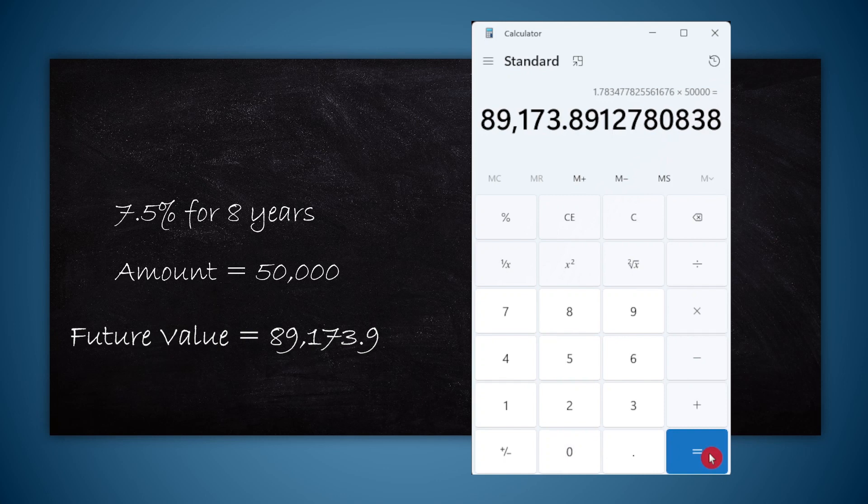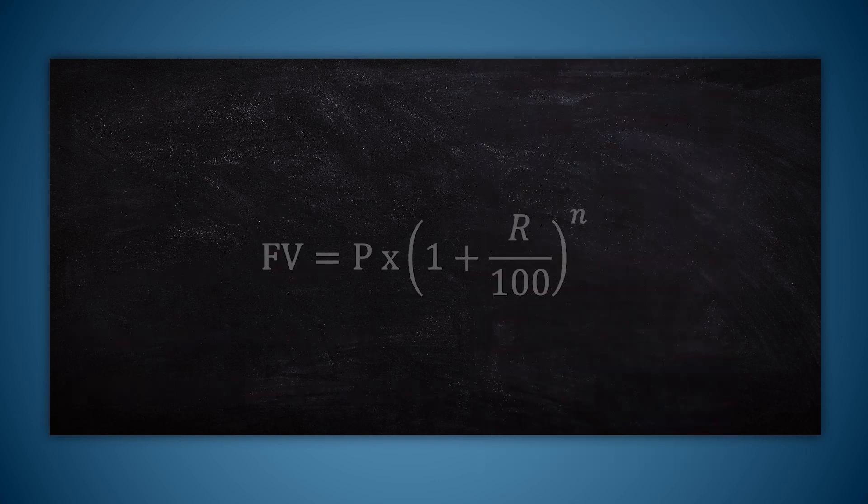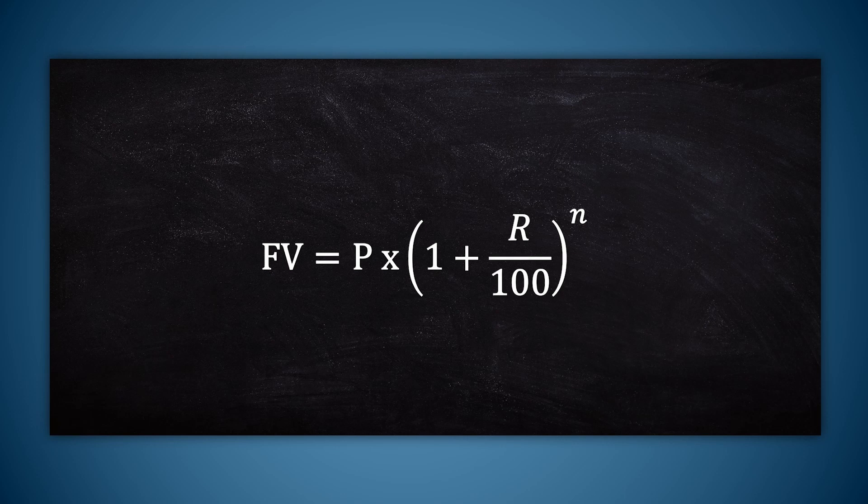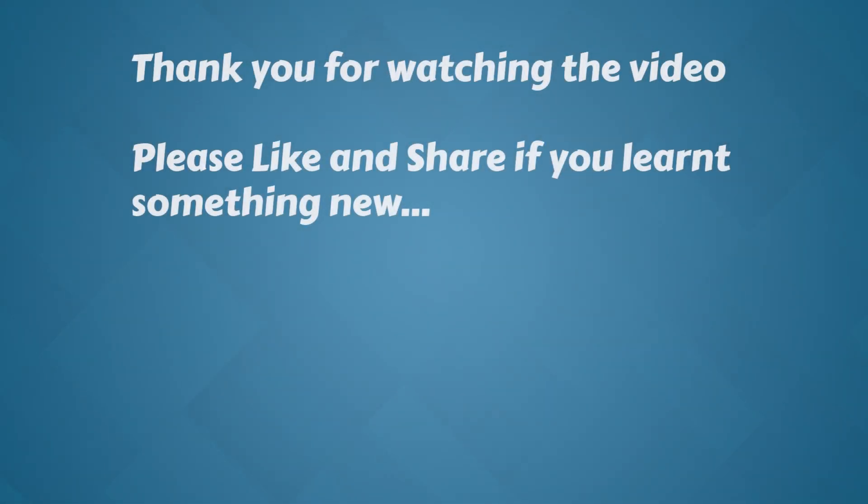If you want to know how much is the interest that you earned alone, you can subtract the original amount of 50,000. So this is the interest that you earned. Somehow for me this is far easier to remember than this formula, and I hope that there are others out there who will find this useful.